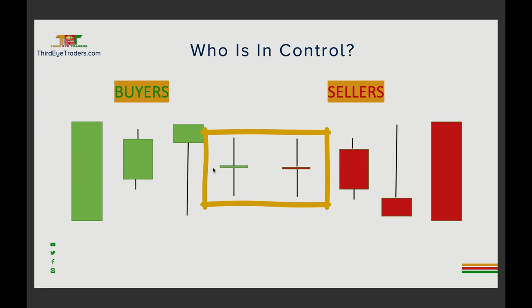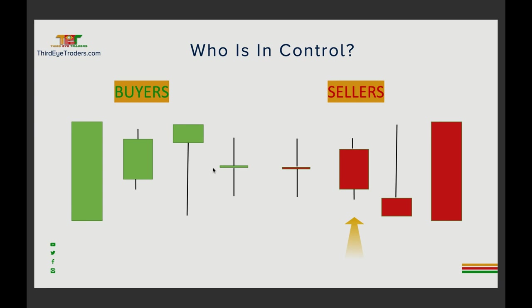When you look to the right, you see that the sellers have taken over the market as well. The sellers tried to push it down a little farther, the buyers pushed it up, but the sellers overall remained in control. And when you look at the bearish pin bar, ultimately this was a fight for control but the sellers remained intact. This massive bearish candlestick shows sellers were in full control.